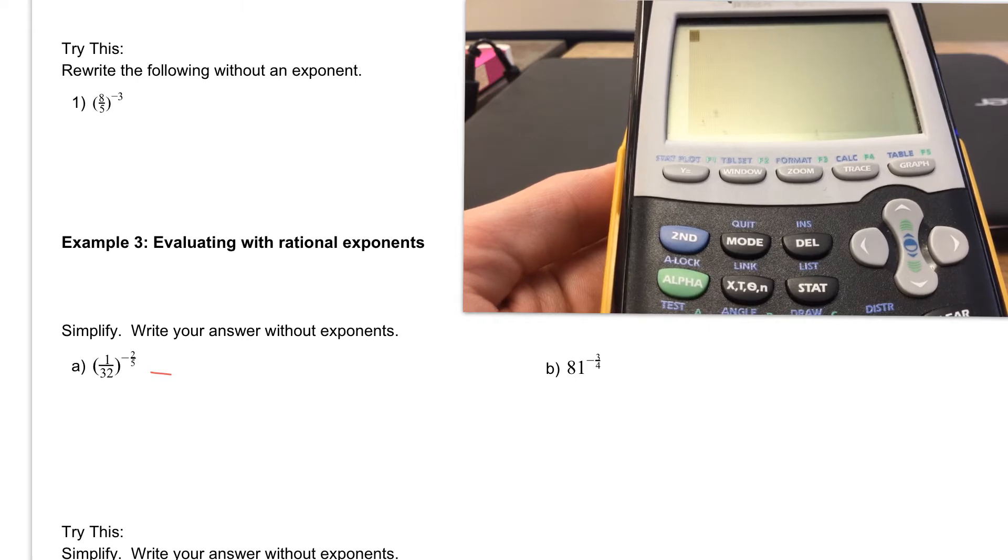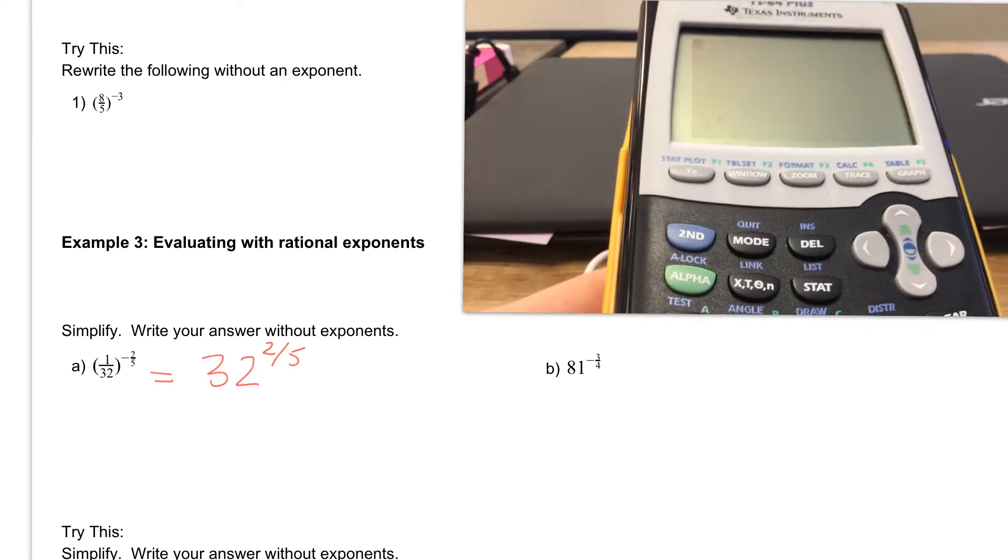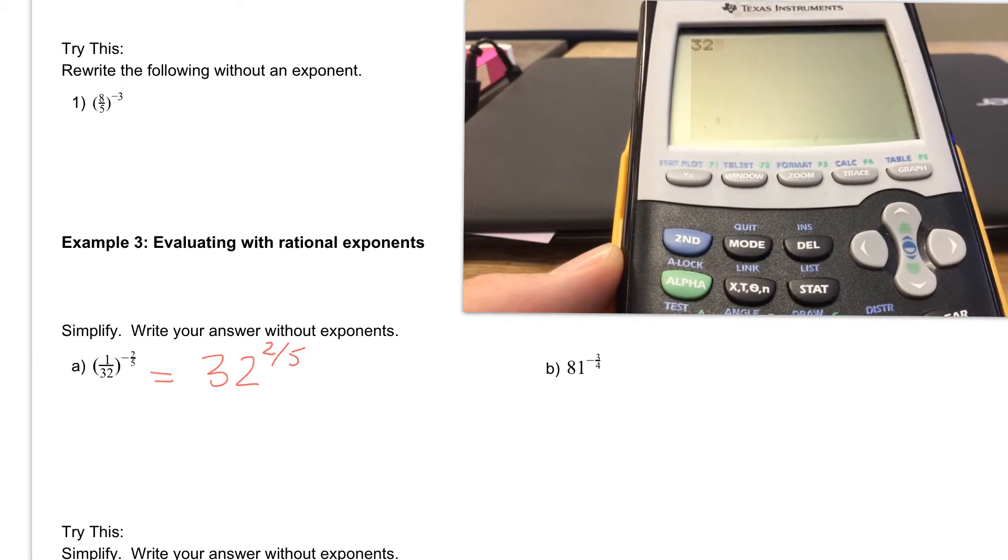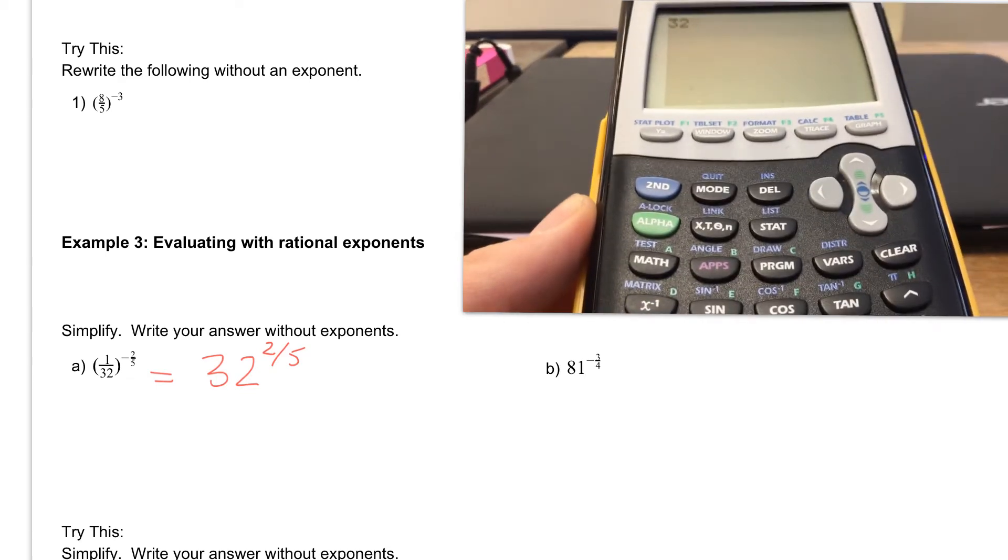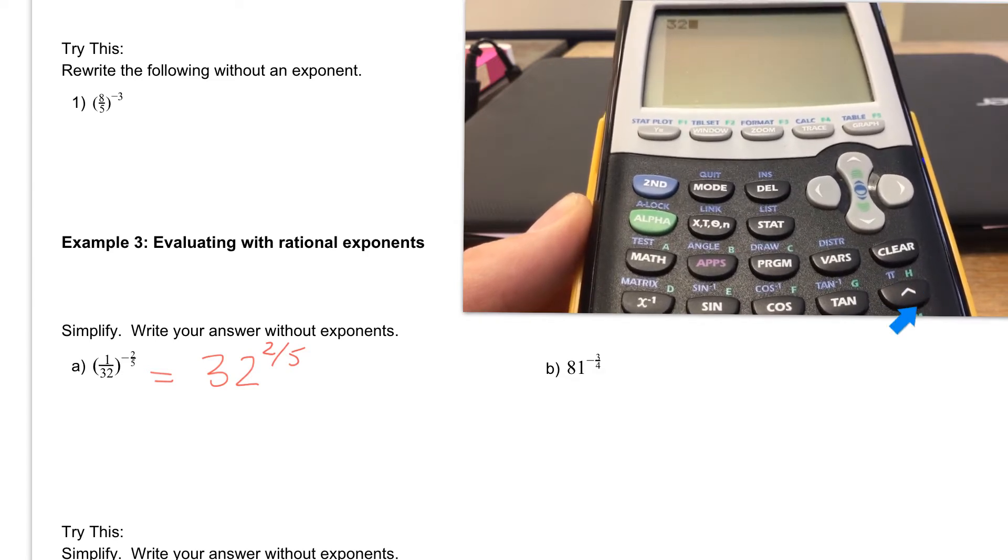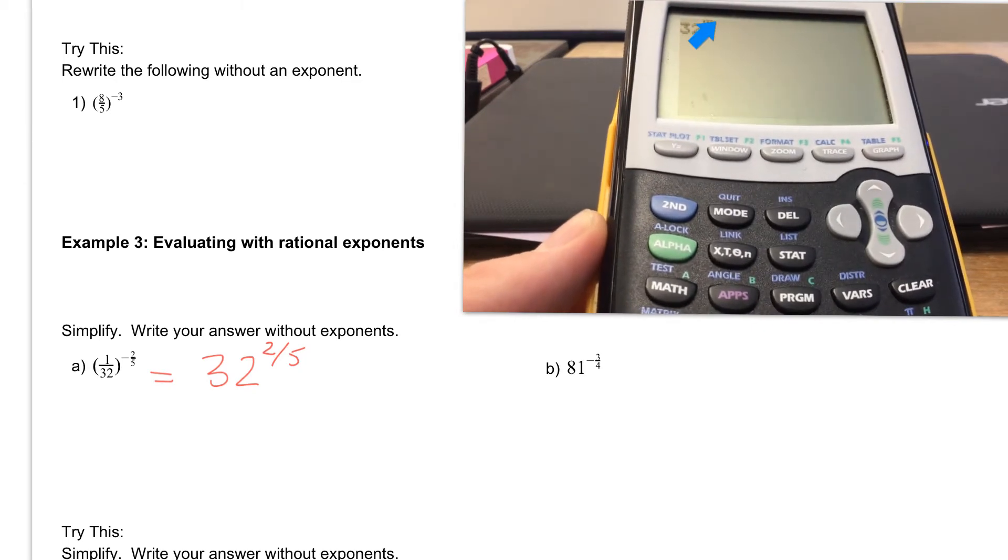So when we type in our calculator, I want you to take a look over here right now. I'm going to go ahead and type it in. We're going to have 32, so let's type in 32. And we are going to raise it, so your exponent key, hopefully you know that by now, is this little caret key right here underneath the clear button. So if we hit that button, that's going to raise us up to the exponent here.